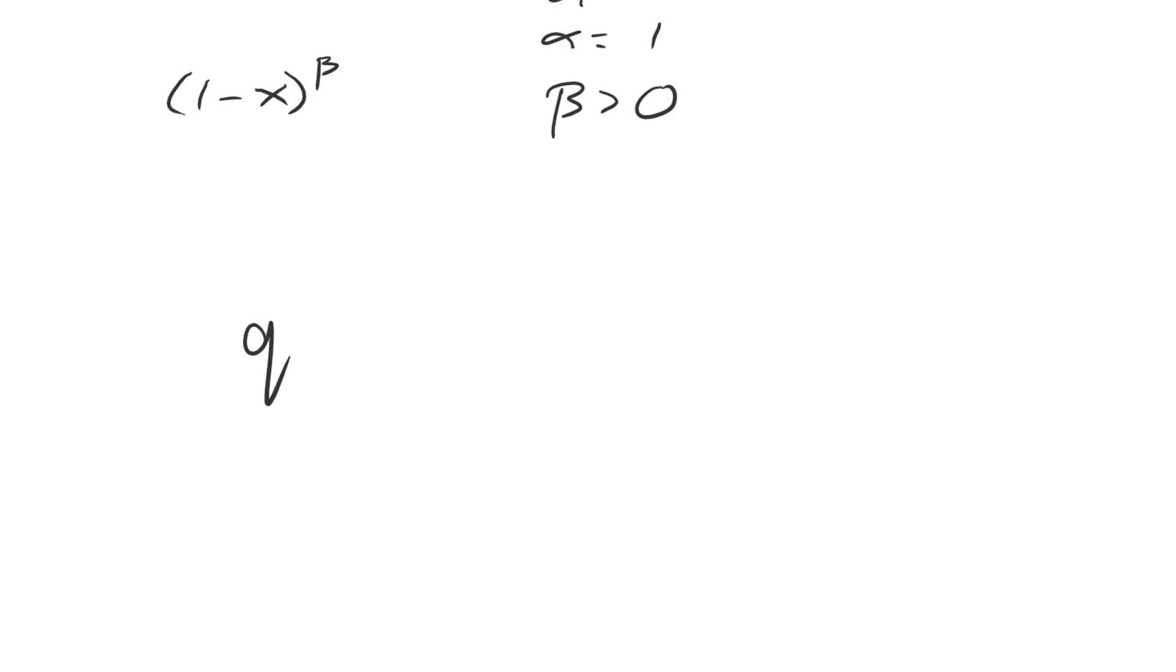You're going to get the low-cost type to reject if A's prior belief, Q, is greater than, and this is a giant mess, so bear with me for a moment, one minus one minus P minus CB to the one over beta all to the alpha minus quantity P minus CA, divided by one minus one minus P minus CB prime raised to the one over beta raised to the alpha minus P minus CA.